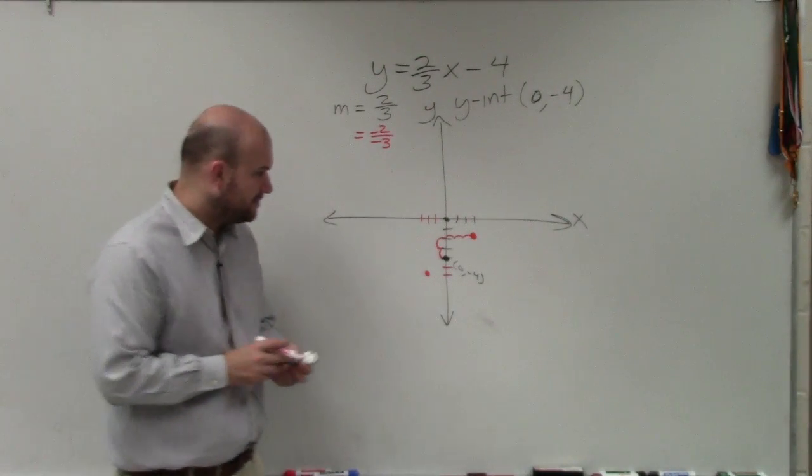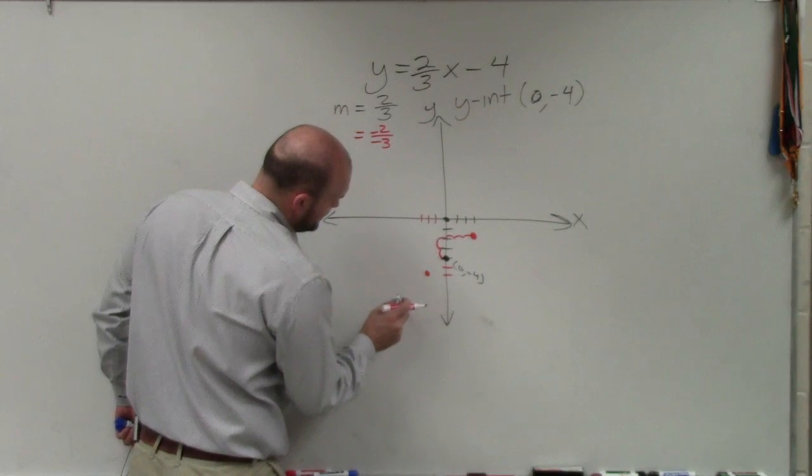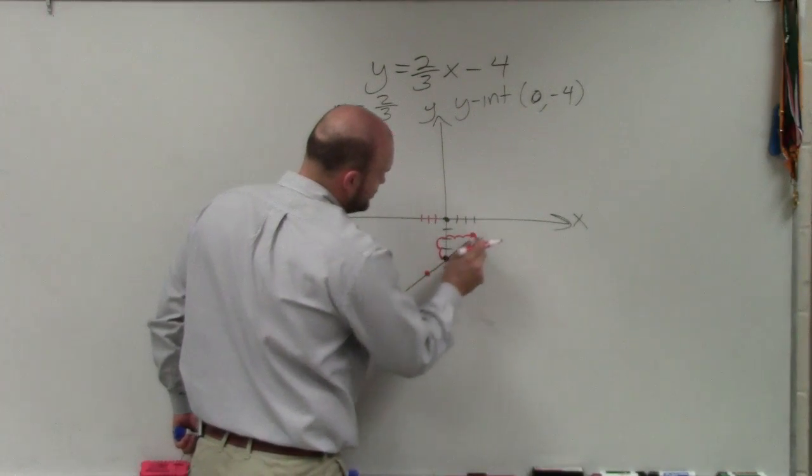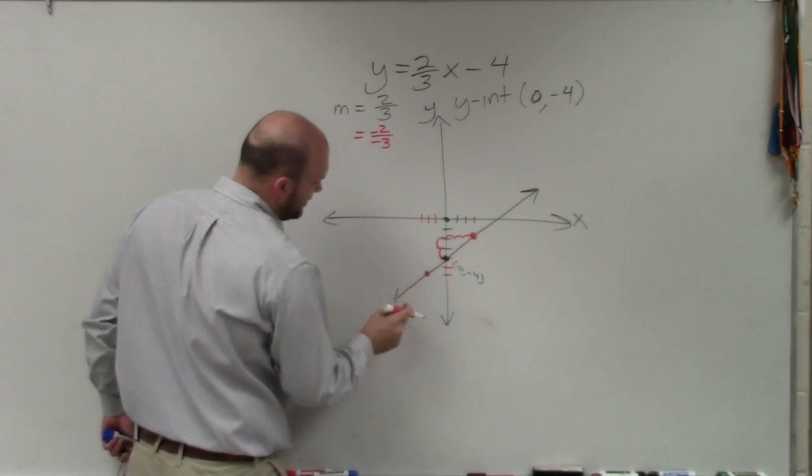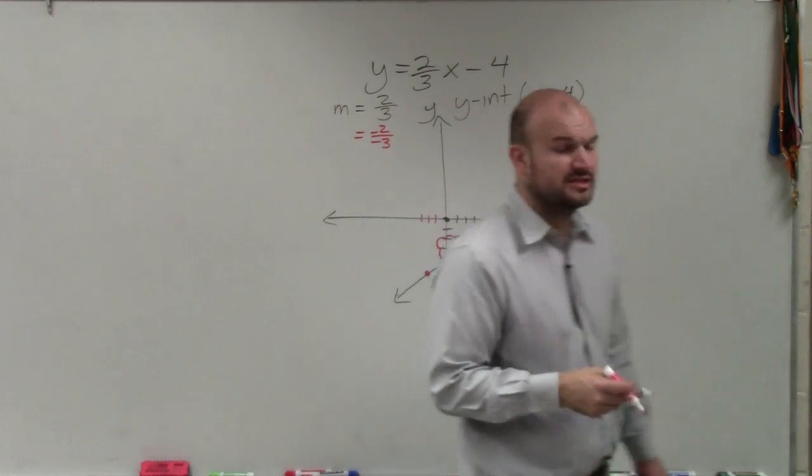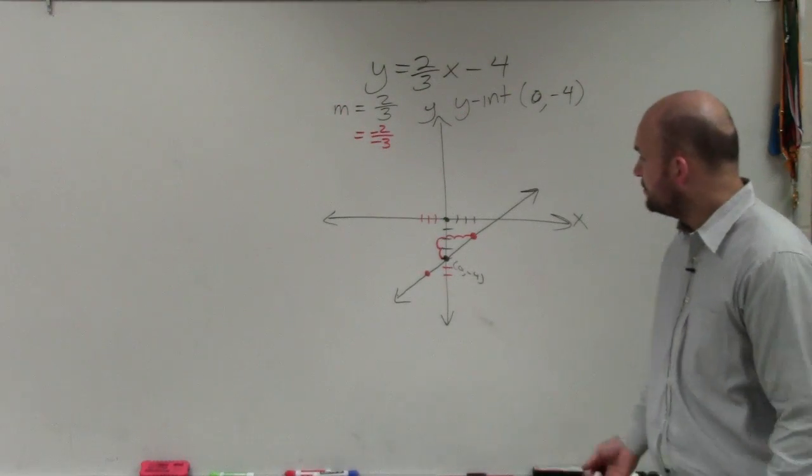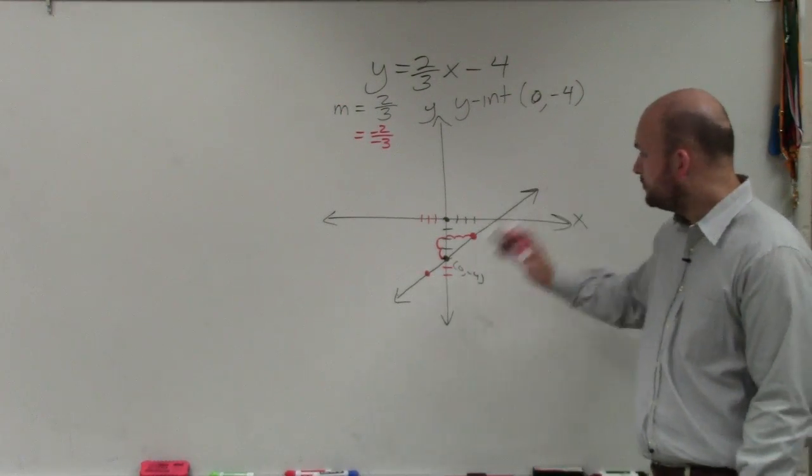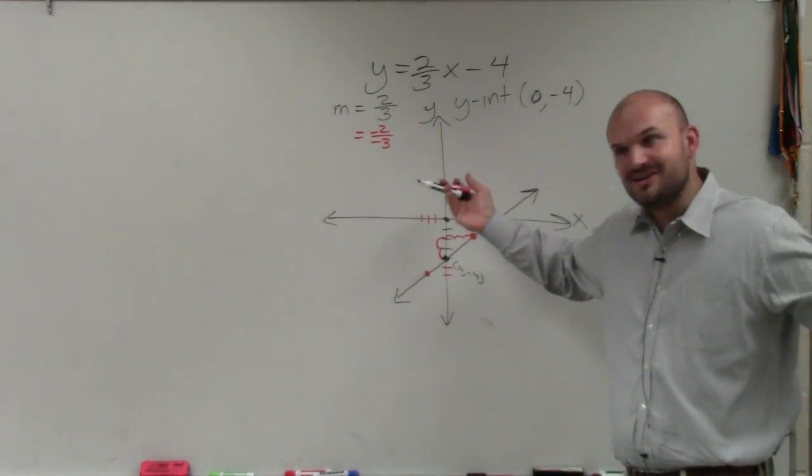Then all we simply do is either take a ruler or just sketch it the best we can. Go through our two points. You don't need to do the third point like I did. You don't need to go in both directions. You just need to go in one direction. Go ahead and connect your points. Make sure you put arrows as they extend indefinitely. And you're done.